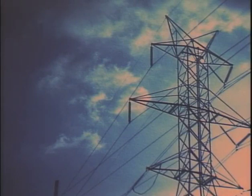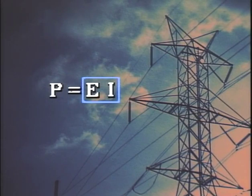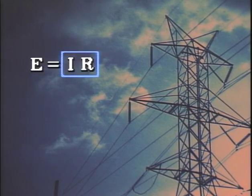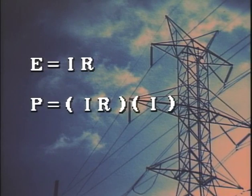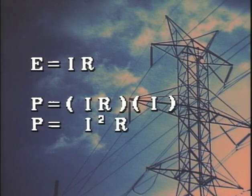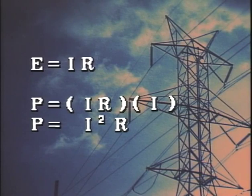Keep this in mind as we look at another equation used in electrical theory to determine the power in a circuit. Power, measured in watts and represented by P, is equal to voltage times current. Power can also be expressed by another equation. Using the arrangement of Ohm's Law that solves for voltage, we can substitute the expression IR for E and get P equals IR times I. The equation is shortened to P equals I squared R. Since this equation includes current and resistance, it can be used to determine the power that's wasted or lost in a circuit due to resistance. For this reason, you'll often hear power losses called I squared R losses.